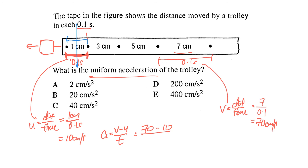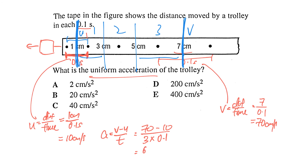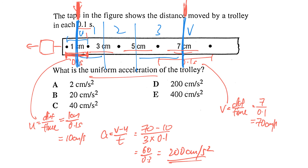For the time interval, to be accurate you count from the center of the first interval to the center of the last interval. Counting the intervals between them: 1, 2, 3 — there are 3 intervals, each 0.1 second, giving 0.3 seconds total. So acceleration equals 60 divided by 0.3, which is 200 cm/s². Note: do not count 4 intervals — always measure from midpoint to midpoint of the end intervals.